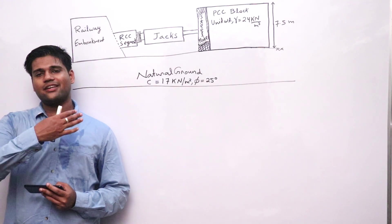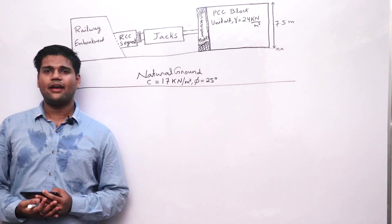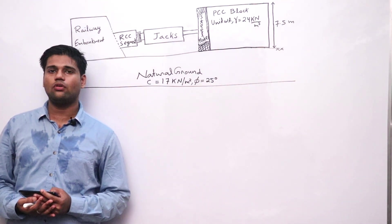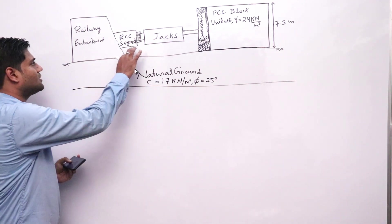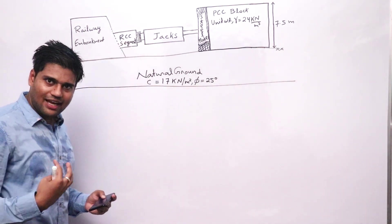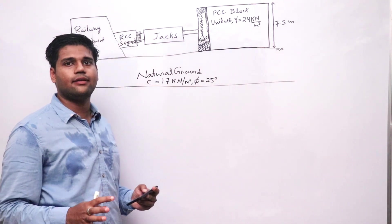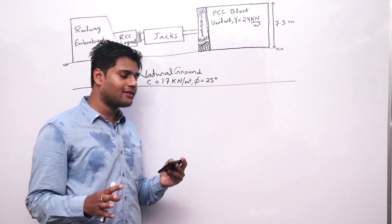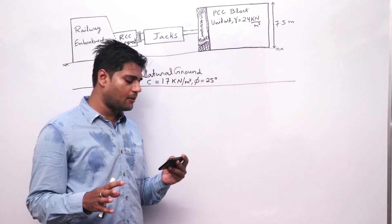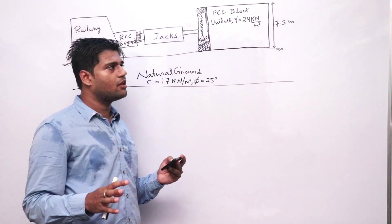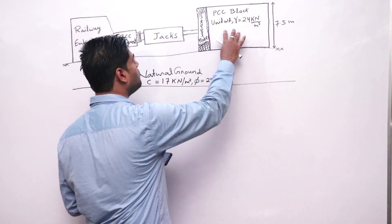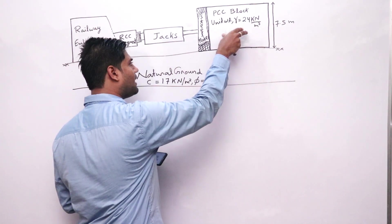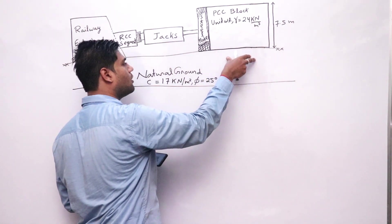So in the question, he has shown this following arrangement. In the first line of the question, he has told that he wants to install this RCC segment. To install this RCC segment, he has to make a reaction arrangement. A reaction arrangement using a PCC block placed on the ground means this reaction arrangement would be made by a PCC block and will be on the ground surface.